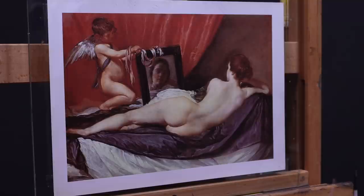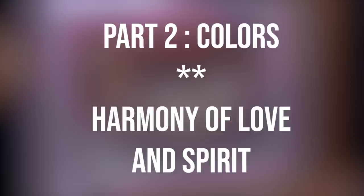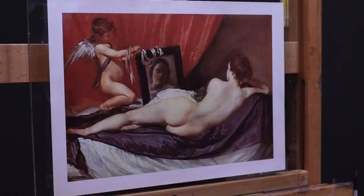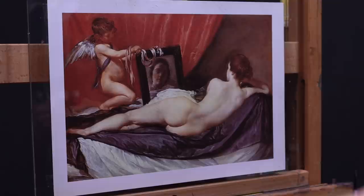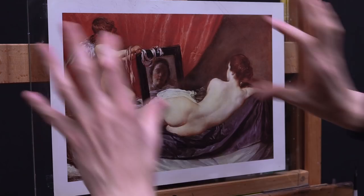Now let's talk about the colors and the harmony of love and spirit. The tone is set by the red, which is often linked to desire and passion. This red is very present in the painting and sets its tone. If you closed this video and someone asked you a week later to describe what colors this painting was, you'd probably say red — that's the color that strikes the most. And yet, if you look closely, it doesn't actually occupy that much space — just a small corner.